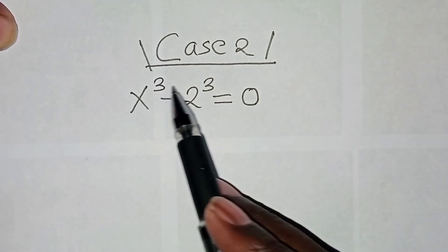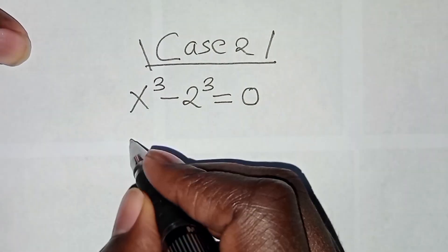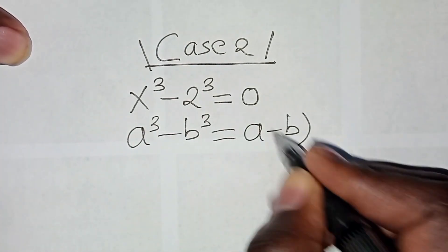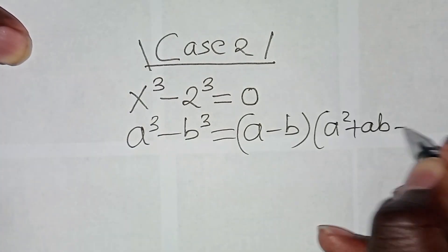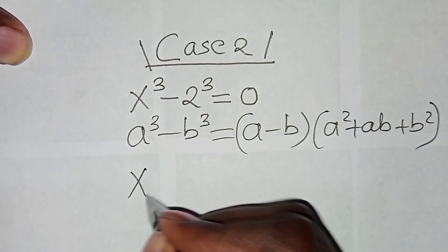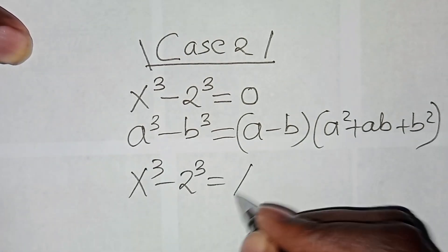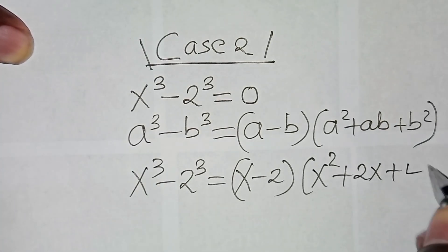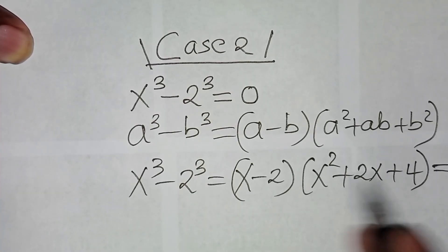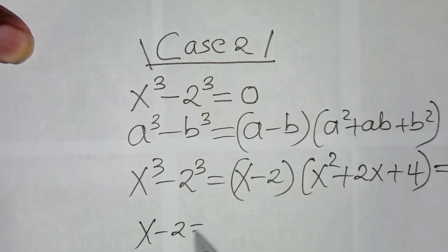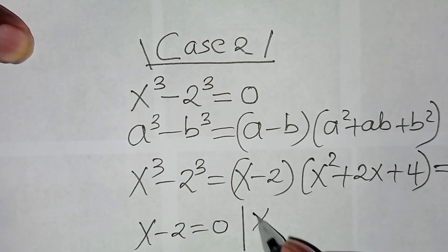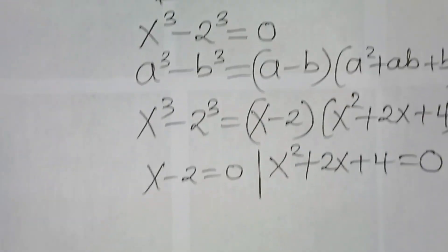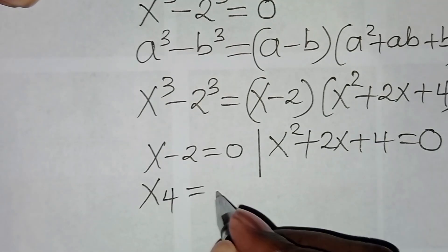For case 2, we have x to the power of 3 minus 2 to the power of 3. This is the difference of 2 cubes, expressed as (a minus b)(a squared plus ab plus b squared). So x to the power 3 minus 2 to the power 3 equals (x minus 2)(x squared plus 2x plus 4) equals 0. We have two parts: x minus 2 equals 0, and x squared plus 2x plus 4 equals 0. Therefore x4 equals 2.